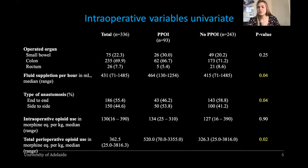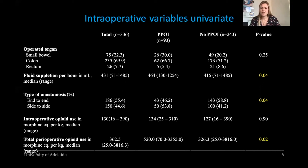The results of the univariate analysis of intraoperative variables: higher levels of fluids were administered in patients that developed PPOI than in patients that did not. Also, more cytosid anastomoses were performed in the PPOI group. We investigated the effect of intraoperative opiate use in morphine equivalents per kilogram, but this did not show to have an effect on the development of PPOI.